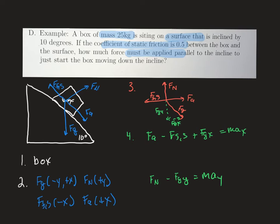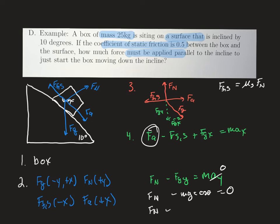Our goal is to find the applied force. To find that, we need the friction force, and since we're finding the minimum force to start motion, we use maximum static friction: coefficient of static friction times force normal. So we start by finding force normal. The y-equation gives: force normal minus mg·cos(θ) = 0, so force normal minus 25 kg × 9.8 m/s² × cos(10°) = 0, giving force normal = 241 newtons.